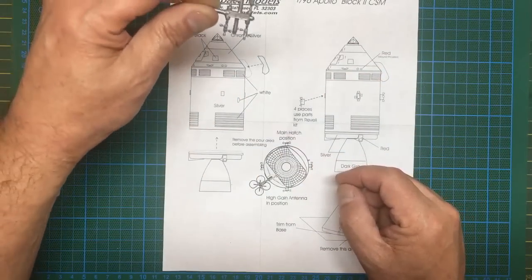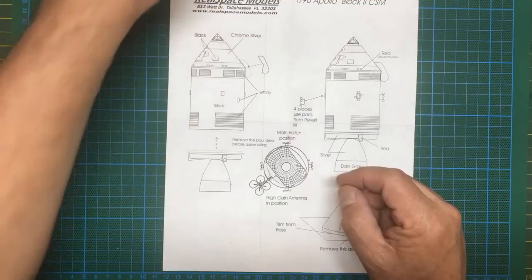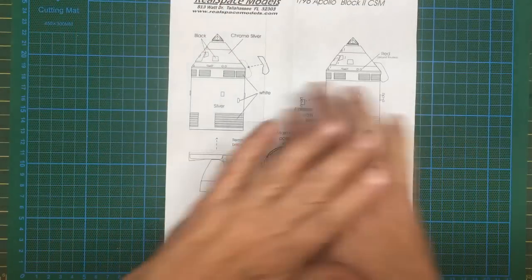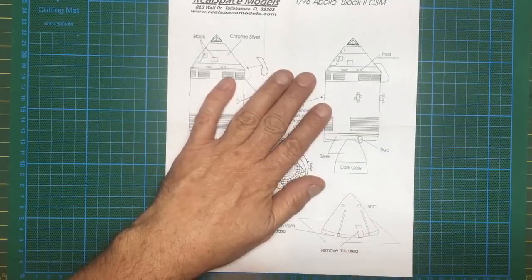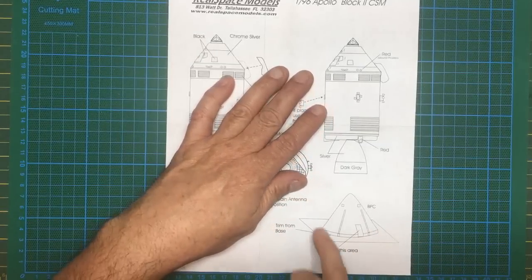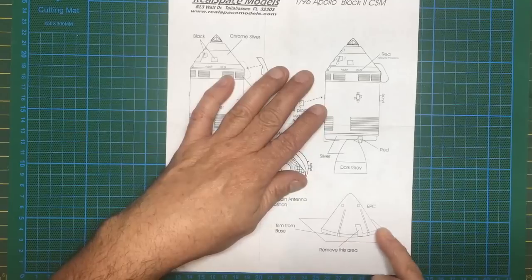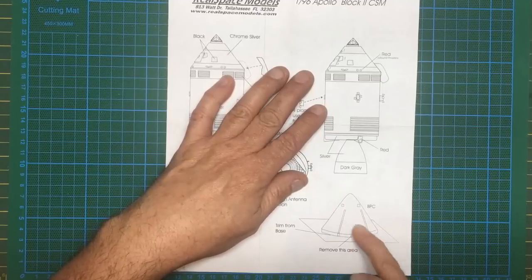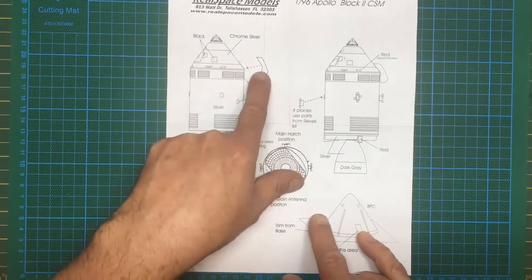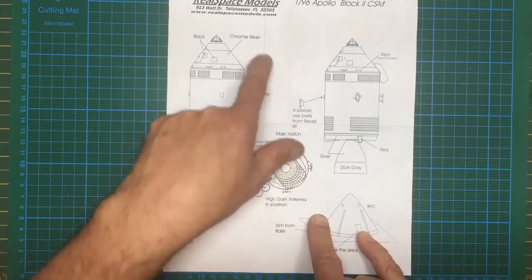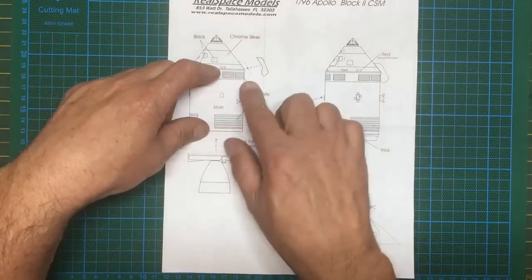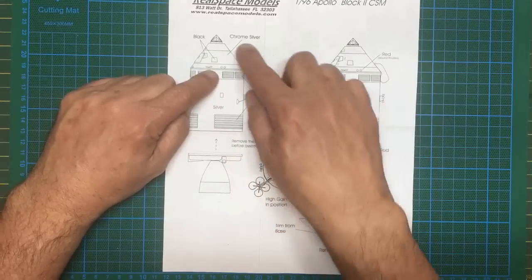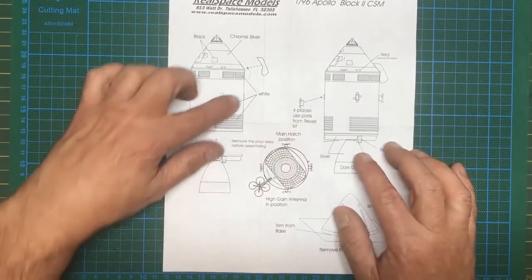It's telling us we need to use the plastic kit parts from Revell for the high-gain antennas, and there they are. They're not so bad, they could be improved upon. It's also telling us we need to use the thrusters from Revell, and there they are. They're not so bad either. There's a bit of flash on them, but with a quick drill just open them out on the ends.